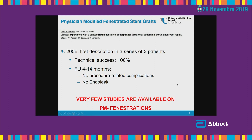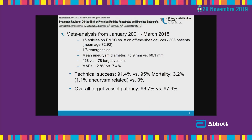Sometimes we also have to treat type 1 endoleaks, which is not so easy to do. That's why an alternative for these patients would be physician-modifying stent grafts. This solution — it's not entirely new. You can see here the first three very successful cases were presented in 2006. But for the moment, there are very few studies available on physician-modified fenestrations. The latest meta-analysis was published in 2015, compressing 15 articles between 2001 and 2015.